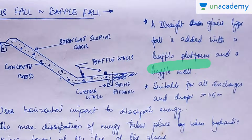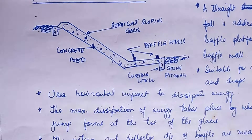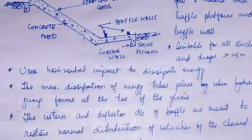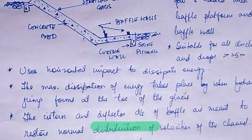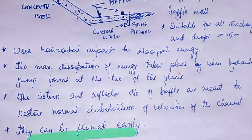The straight glacis type wall is added with a baffle platform and baffle walls. This type is suitable for all discharges and drops of more than 1.5 meters. It uses horizontal impact to dissipate energy. Maximum energy dissipation takes place when the hydraulic jump forms at the toe of the glacis. The cistern and deflection walls downstream restore normal distribution of velocities to the channel.